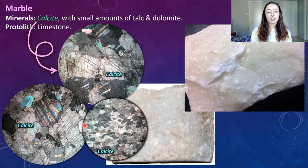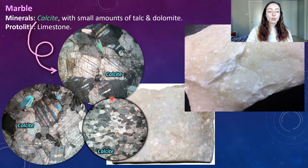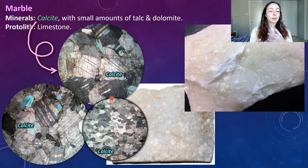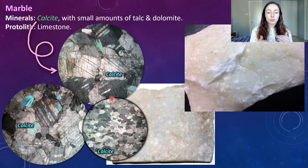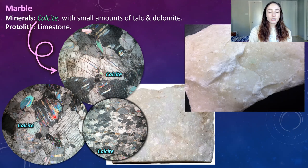Calcite and dolomite look similar under thin section, but what's really distinct about calcite is its three cleavage planes. You can see these lines on each of the calcite grains in these thin sections — those lines represent cleavage planes. If we were to rotate the thin section under the microscope, you'd see those lines change and appear differently as the grains change angle relative to the light. These show up as very light, pale interference colors under cross-polarized light.